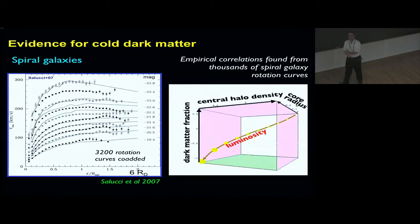What is remarkable about rotation curves of spiral galaxies is the regularity they present in their structure. There is a relation between the amount of luminous matter and the amount of dark matter that is sometimes forgotten.